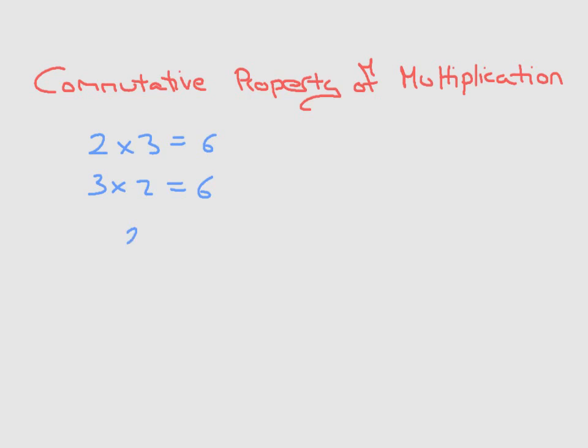This means that 2 times 3 is the same thing as 3 times 2. What's just happened here is that we've changed the order of our multiplication, and as we can see, the value, or the result, is unchanged.